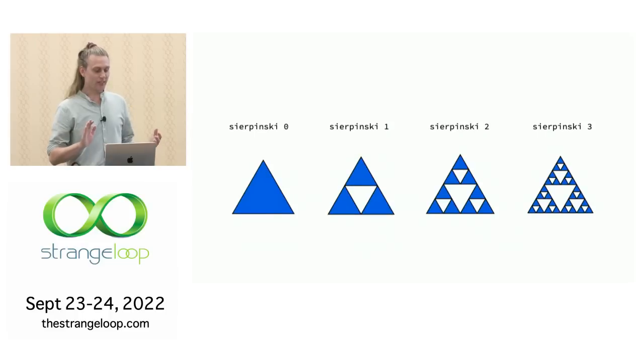And we can do that by writing a recursive function. So we're adding a parameter depth. And if the depth is zero, then we'll just default to the simple triangle. Otherwise, we'll define it in terms of the lower depth Sierpinski triangle. And now we can call this function with zero, we get the zeroth Sierpinski triangle, Sierpinski one, two, and three, and so on. This is great. That was very simple.